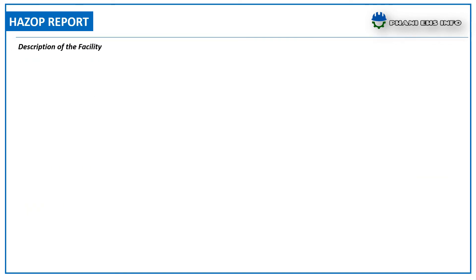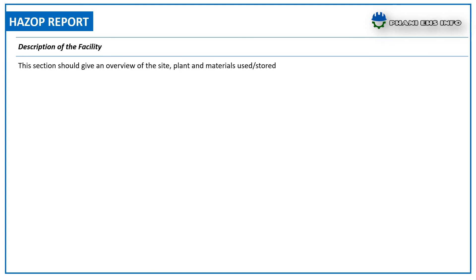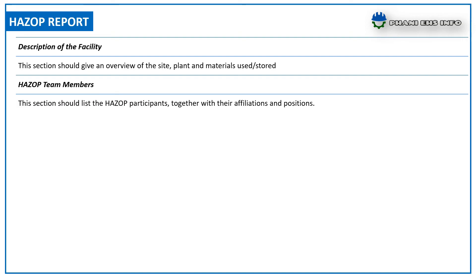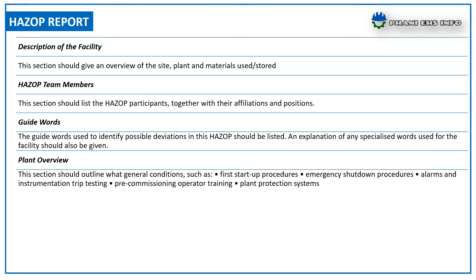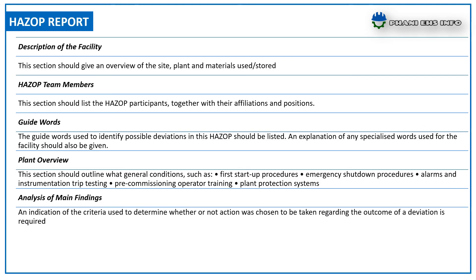The description of the facility section gives an overview of the site, plant, and materials used or stored. The hazard team members section lists the HAZOP participants together with their affiliations and positions. The guide words used to identify possible deviations should be listed. The plant overview section should outline the general conditions and situations likely to result in a potential hazardous outcome.